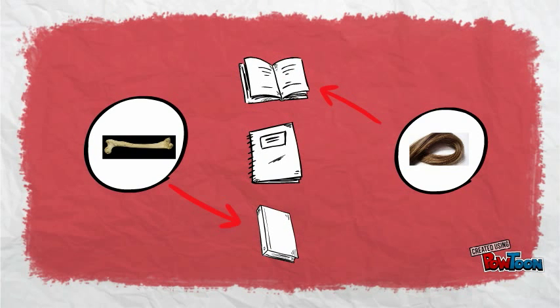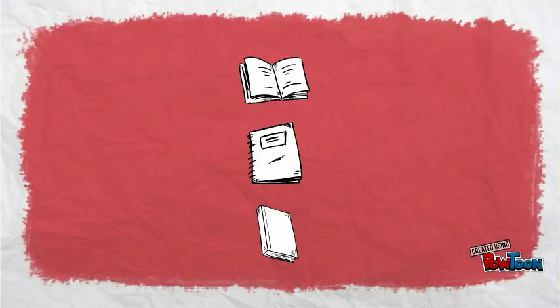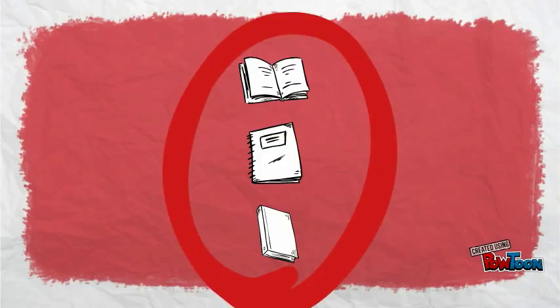That means a bone cell will use different books than a hair cell. In biological terms, these books of specific information that make up the DNA library are called genes.